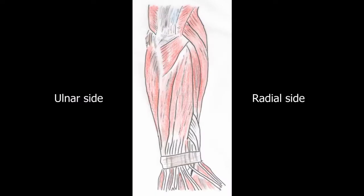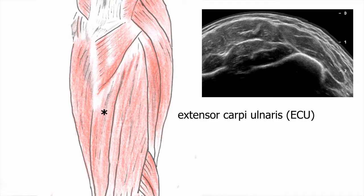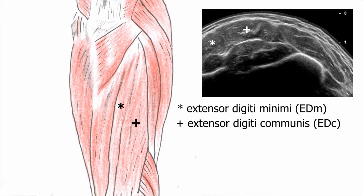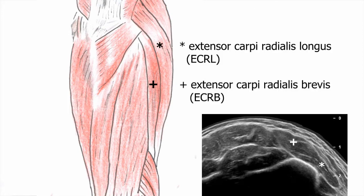Five muscles can be identified going from the ulnar to the radial side: the extensor carpi ulnaris (ECU), extensor digiti minimi (EDM), extensor digiti communis (EDC), extensor carpi radialis brevis (ECRB), and extensor carpi radialis longus (ECRL).